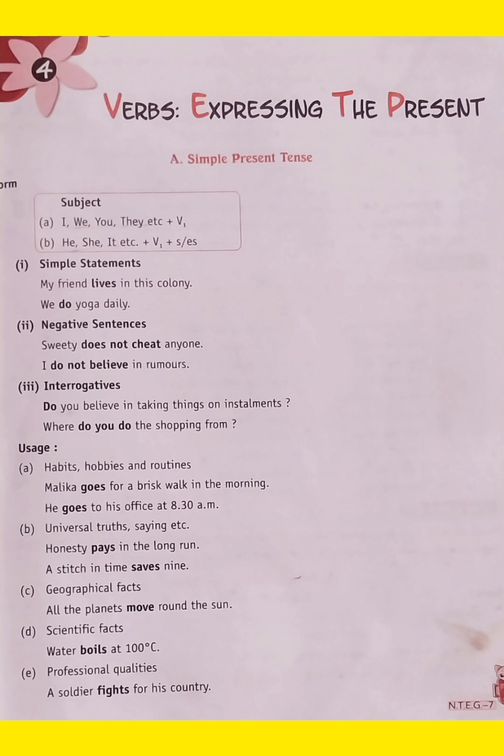Now let's see the forms. With the subject I, we, you, they which are plural forms, we use plural verb that is V1. With the singular subjects, he, she, it, we use V1 plus S, ES or IES.